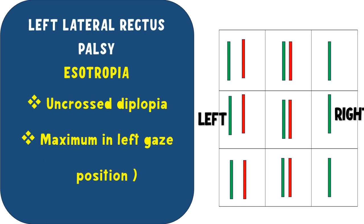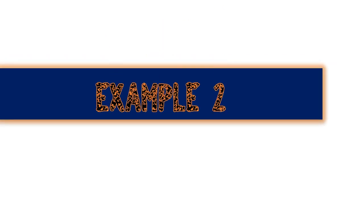To summarize: diplopia is maximum in the field of action of the paralyzed muscle. The false image — belonging to the eye with the underperforming muscle — is always peripherally situated. In example one, we concluded left lateral rectus palsy with esotropia, uncrossed diplopia, maximum separation in the left gaze, and the most peripheral image from the left eye.